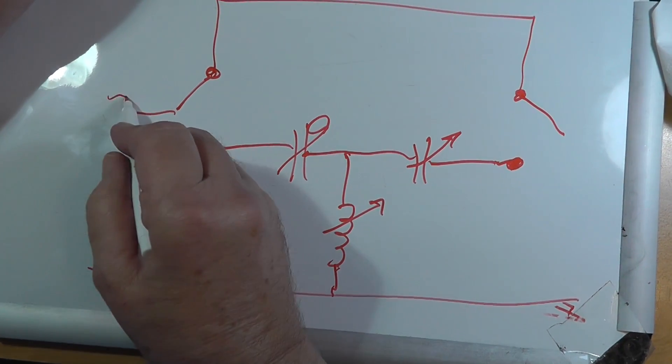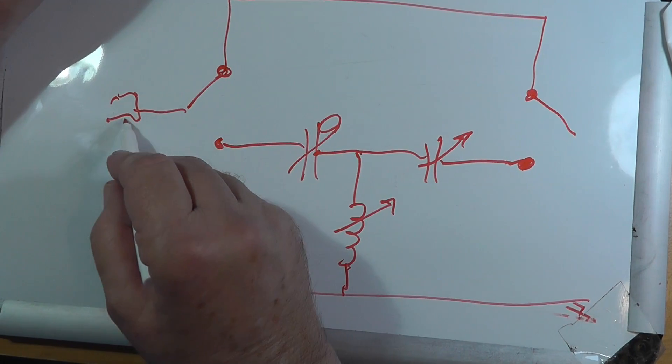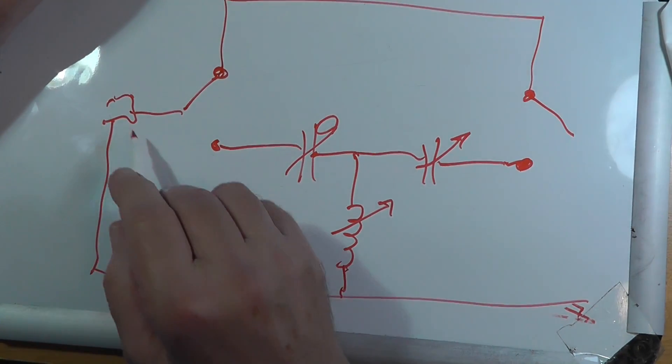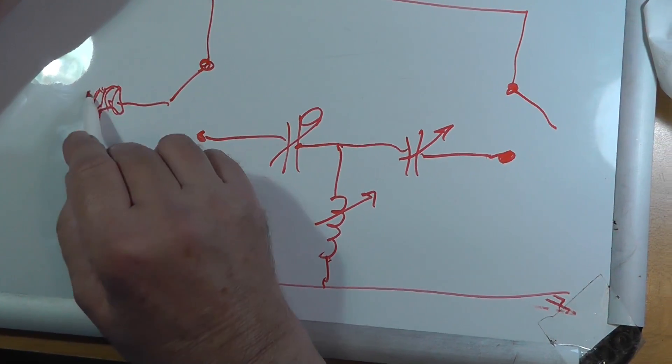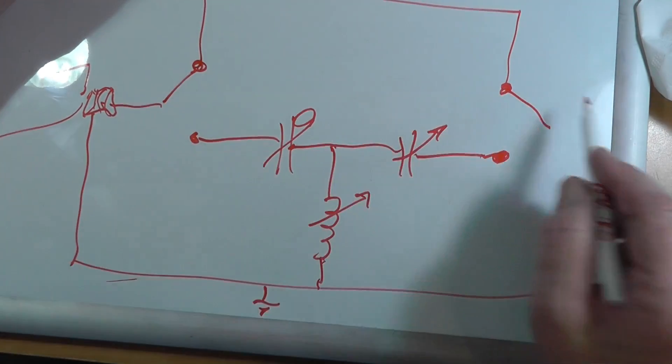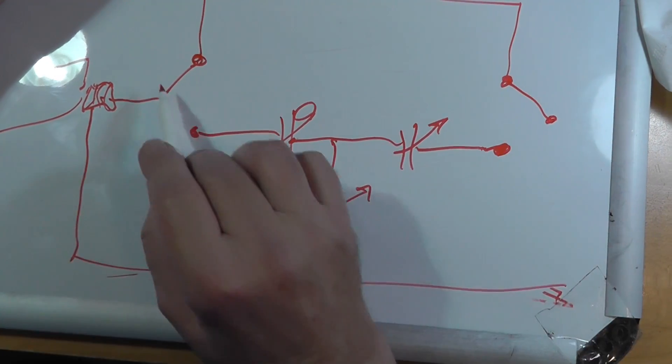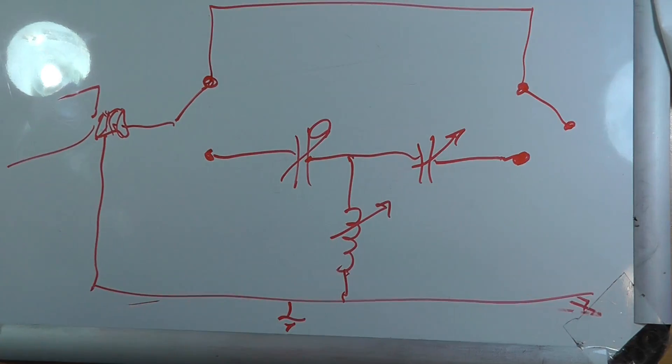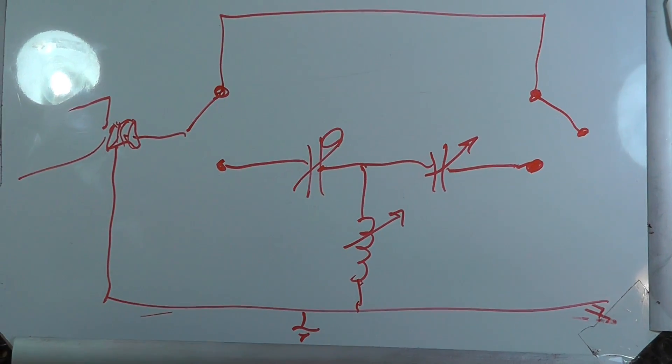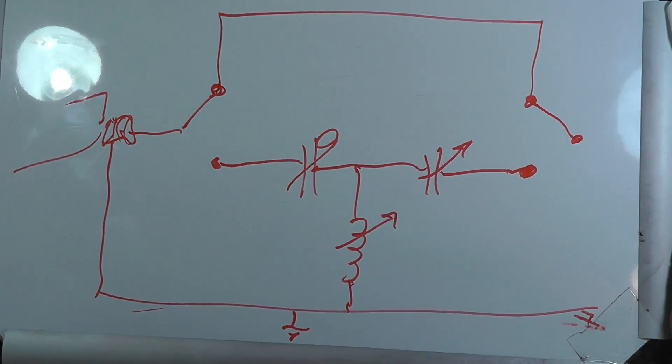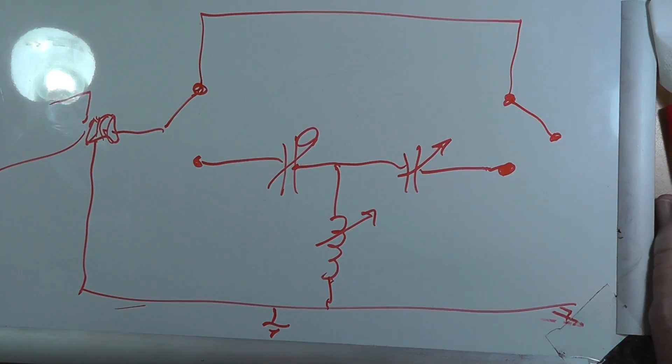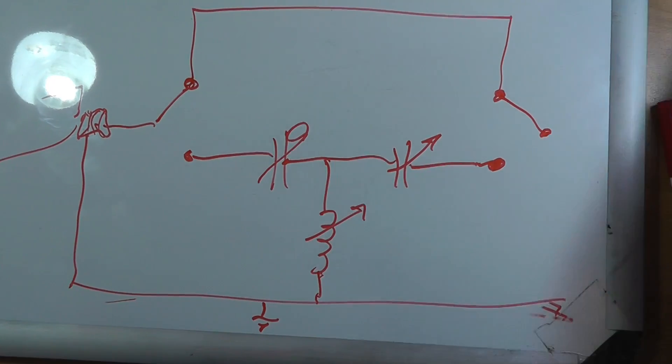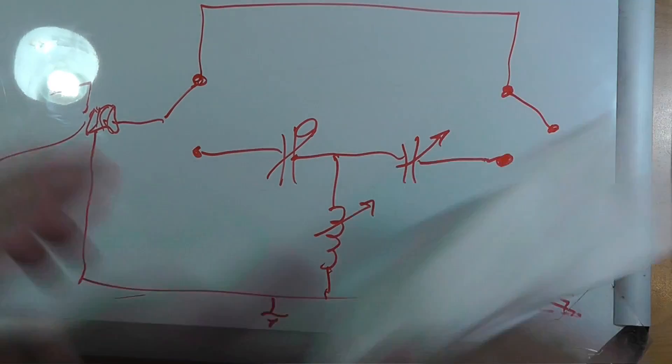This is grounded. So, your coax comes in here. The outer conductor goes to the ground, of course. This is your coax. And the same over here. So, this is how you would bypass an antenna tuner. Now, not all of my antenna tuners have a bypass, but some of them do. So, it's very handy to have.